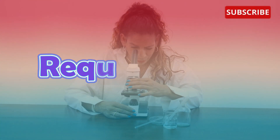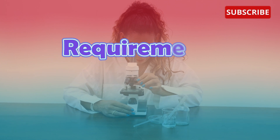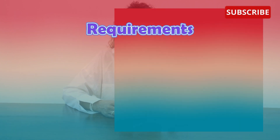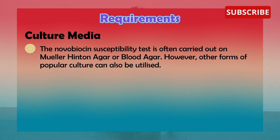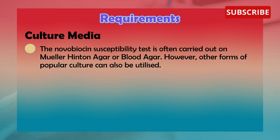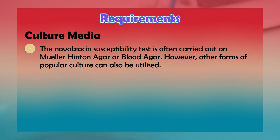Now for the requirements of this test. The first is the culture media. The novobiocin susceptibility test is often carried out on Mueller-Hinton agar or blood agar; however, other forms of popular culture media can be utilized.